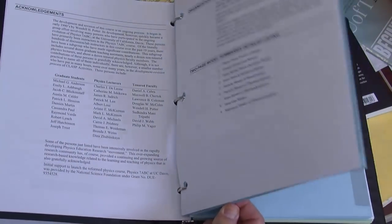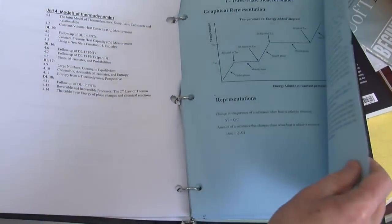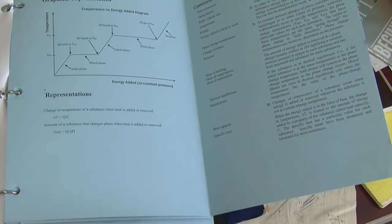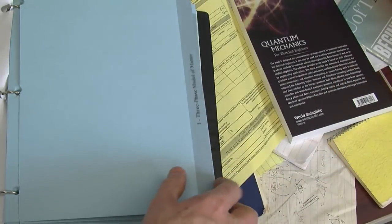If you ever get confused or need a quick reminder, you can turn to these pages for a quick recap. For the three-phase model of matter, we can use the temperature versus energy added diagram to see how much energy you have to add to raise the temperature of a sample or to change its phase.